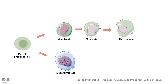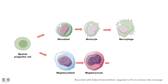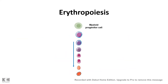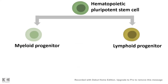The myeloid progenitor cell can also give rise to megakaryoblasts, which through sequential steps give rise to platelets — important components of blood. It's also worth noting that the whole process of erythropoiesis takes place from the myeloid progenitor cell, meaning red blood cells are also born from the myeloid progenitor through several rounds of differentiation.